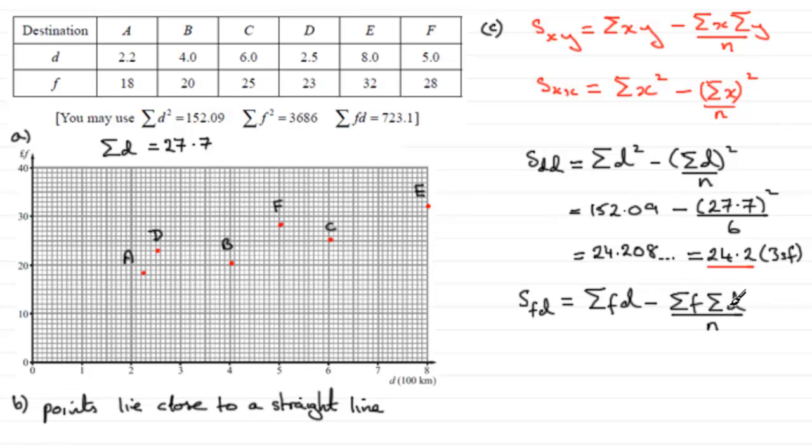So all we've got to do is substitute our values in for this. But we don't know the sum of F, Sigma F. So you're going to have to add up this row here, the 18, 20, 25, 23, 32 and 28. And if you do that, Sigma F, you'll find, comes to 146.